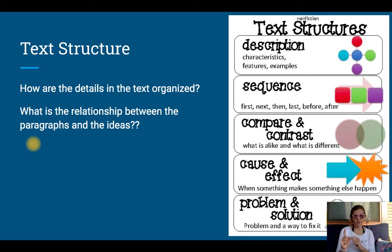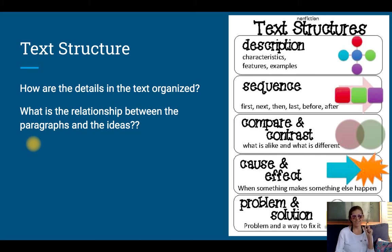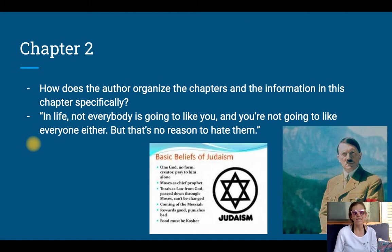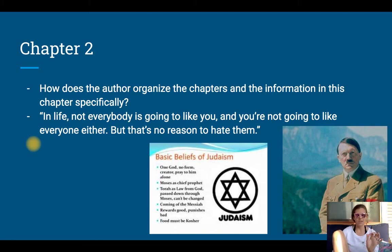With literature, we can look at it and know the structure without even reading it — we flip through and say, yep, this is a play, or that's a poem. You can't do that with informational text. You have to actually read it to figure out how the author organized the information and how they're presenting it to you. So we're going to look at the structure of this text, look at how the chapters are presented and connected, and how that information is organized and given to us. As we read, think about how the author organizes the chapters and the information in this chapter specifically.